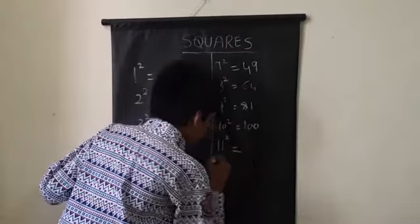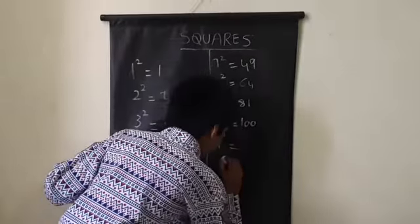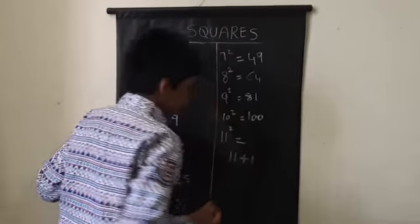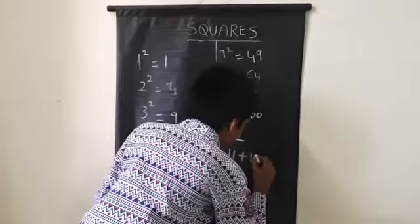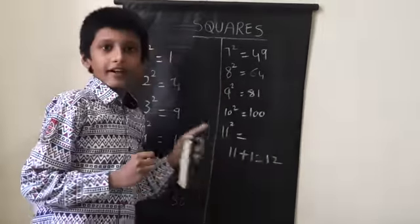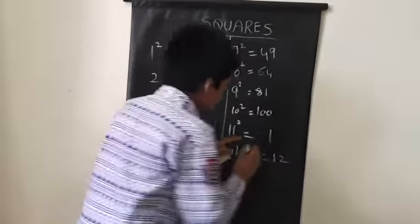Eleven square. See? This, how much more than ten? One. Eleven plus one. Eleven plus one, how much? Twelve. See? This one plus one, one more than one. This twelve as it is right here.